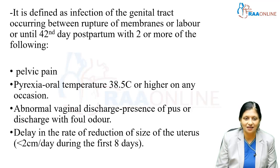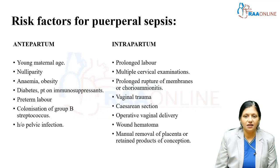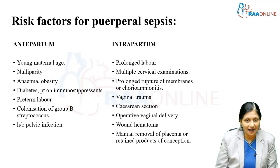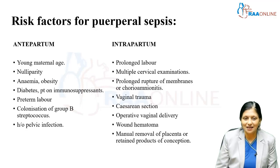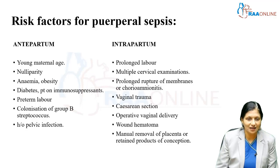There may also be delay in the rate of reduction of size of uterus, called subinvolution. The uterus involutes at the rate of less than 2 cm per day during the first 8 days. Antepartum risk factors for Puerperal sepsis include young maternal age or teenage pregnancies, nulliparity, anemia, obesity, diabetes, patients on immunosuppressants, preterm labor, colonization of Group B Streptococcus, and history of pelvic infection.